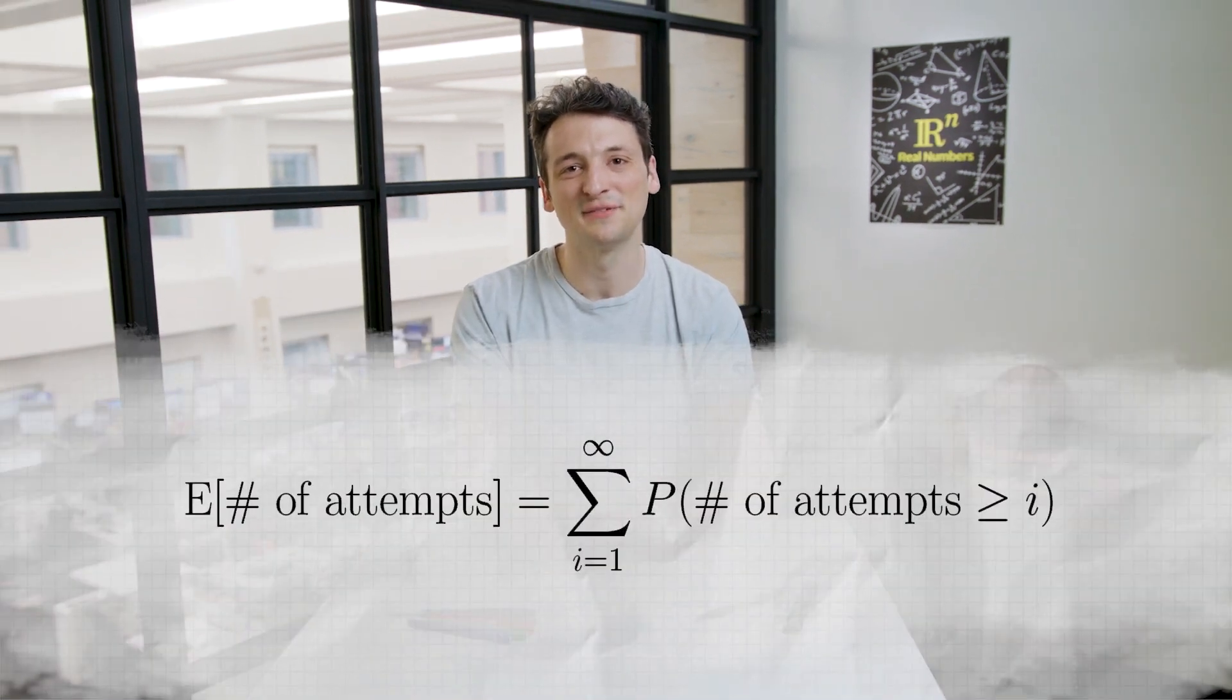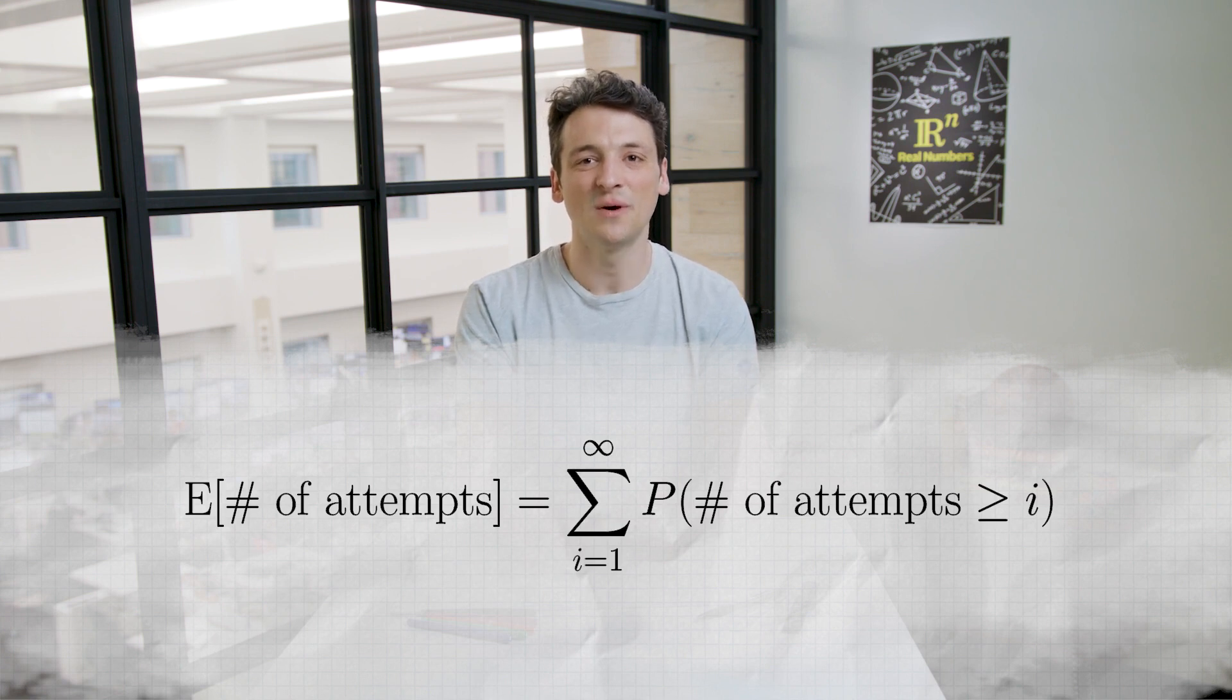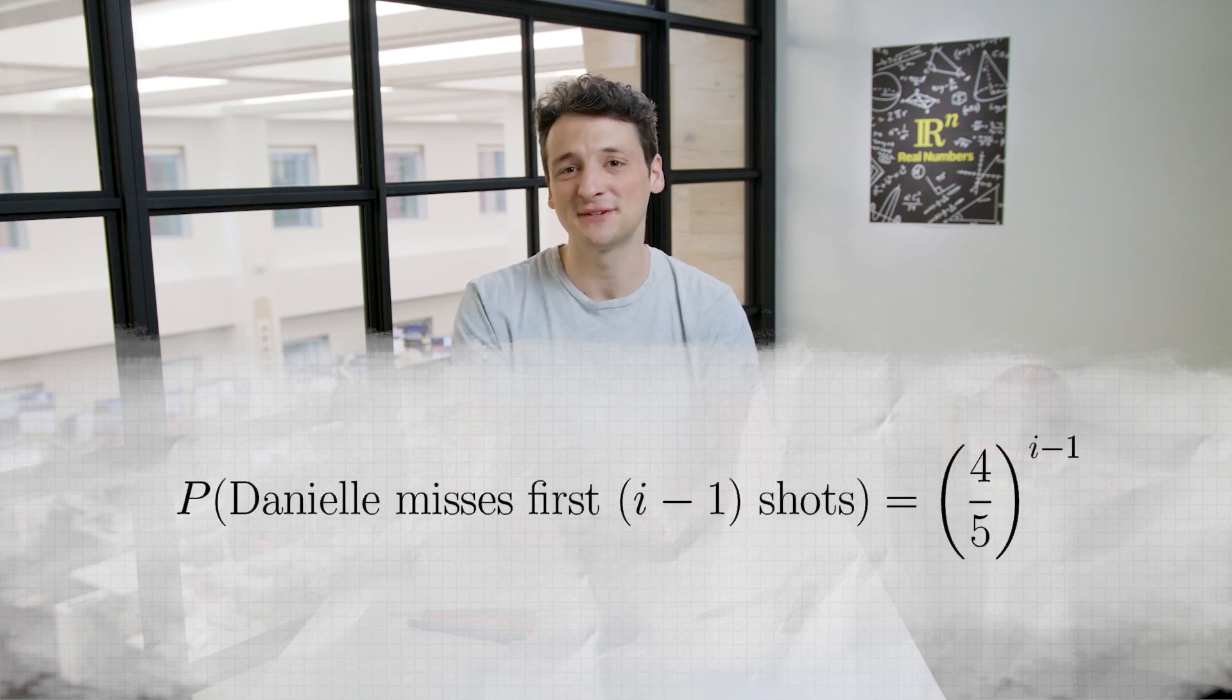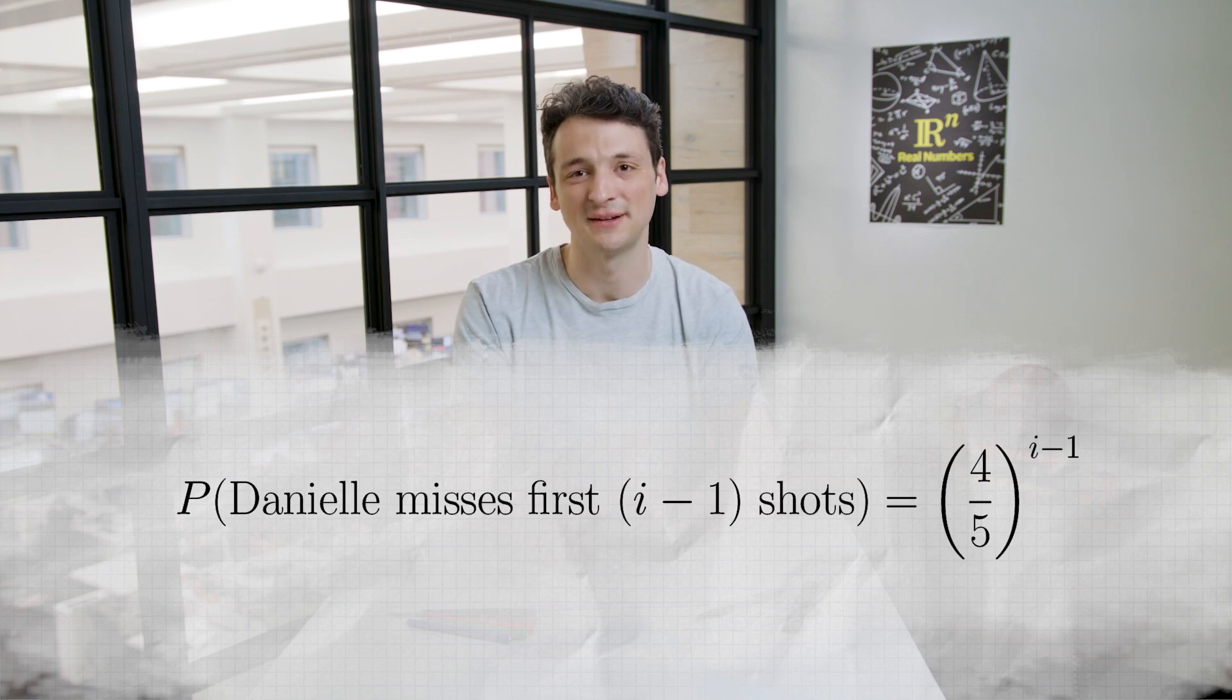Last week, we introduced a formula for the expected value of a result that is always a non-negative integer, just like the number of attempts that Danielle needs to end her practice. The formula is the expected value of the number of attempts equals the sum from i equal 1 to infinity of the probability the number of attempts is greater than or equal to i. What is the probability that Danielle needs at least i attempts for some positive integer i? Well, that just means she must have missed her first i-1 shots. Each miss has a four-fifths chance of occurring, independently, so for i-1 of them all to happen, we need to multiply four-fifths by itself i-1 times.